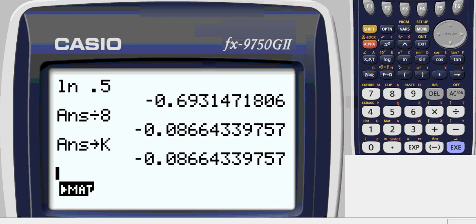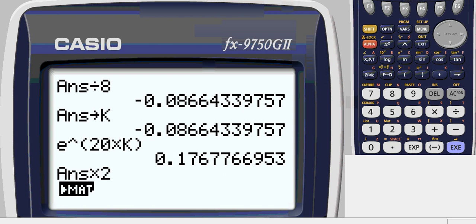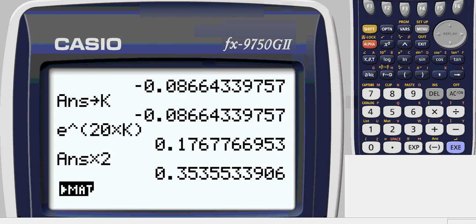So we'll do E to the 20 times k. Use alpha k since we stored it. And then the initial amount was two, so times that initial two that was in front. And we get 0.3536.